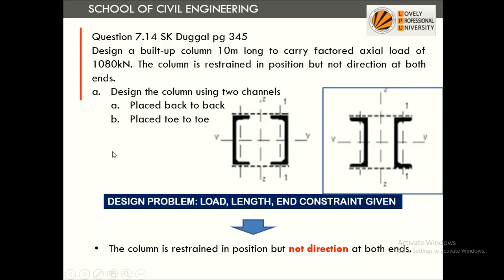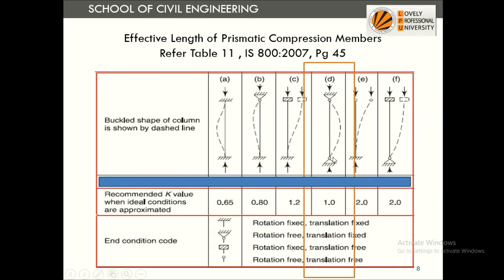This brings us to a textbook problem from SK Duggal, split into three parts: design of the built-up section, lacing, and battening. Design a built-up section 10 meters long to carry a factored load of 1080 kN. The column is restrained in position but not in direction at both ends — this is a pin-pin case, so K equals 1, giving effective length KL equals 1 times 10 meters. The column is to be designed using two channels.